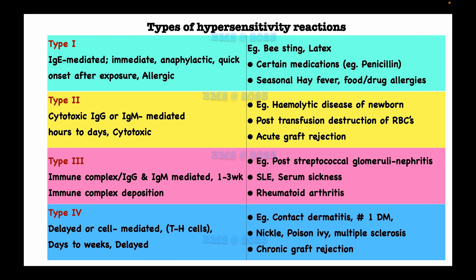The mechanism of type 4 is that T helper cells secrete cytokines which activate macrophages and cytotoxic T cells. Examples include contact dermatitis, type 1 diabetes mellitus, nickel allergy, poison ivy, multiple sclerosis, and chronic graft rejection.